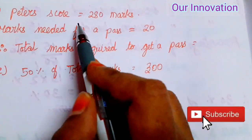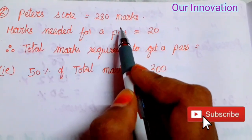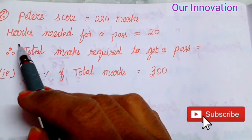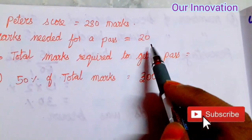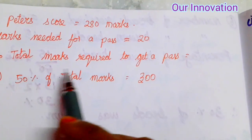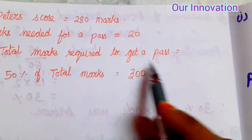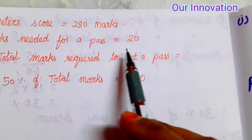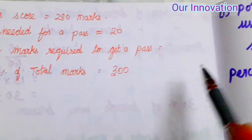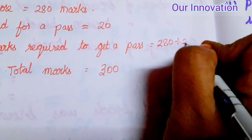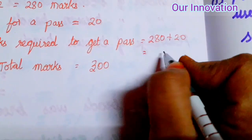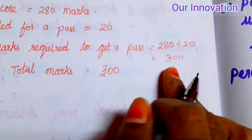Peter's score is equal to 280 marks. Marks needed for a pass: 20 more. Therefore, total marks required to get a pass is 280 plus 20, which is equal to 300.